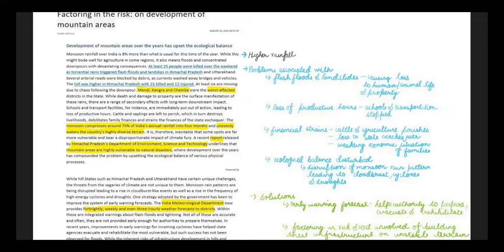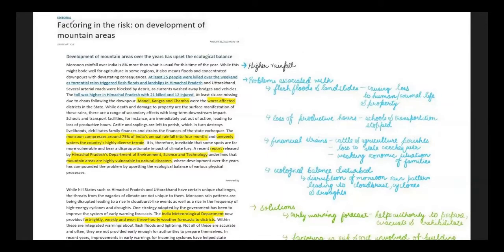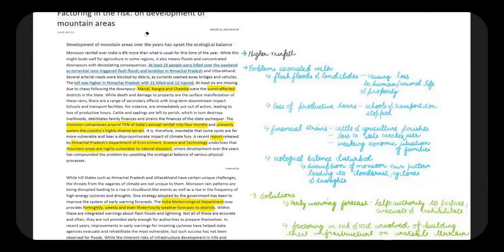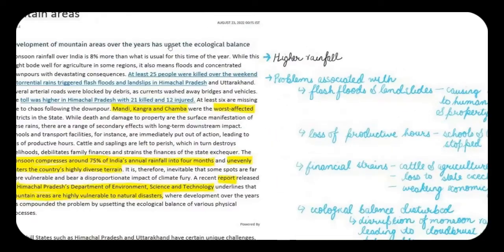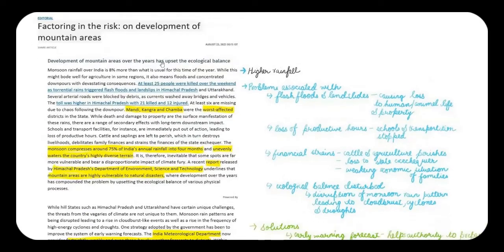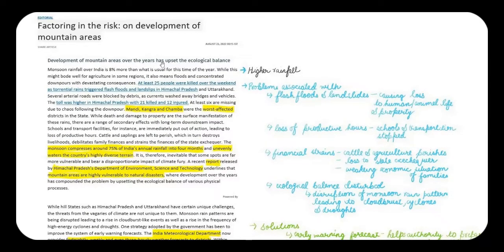Without further delay, let's get started. The heading talks about 'Factoring in the Risk on Development of Mountain Areas.' The focus is on what risks are involved in the developmental process in terms of road construction, buildings, highways, and all those things. A question could be framed asking: given rapid development in mountainous areas due to demand from local authorities or to protect borders, what are the implications? This editorial addresses the problems and solutions.